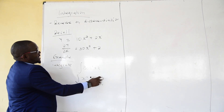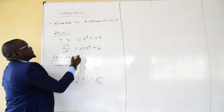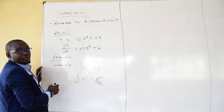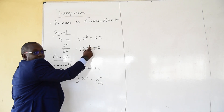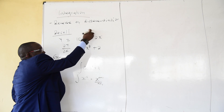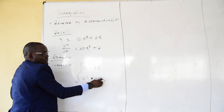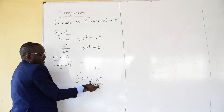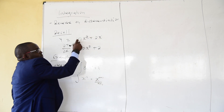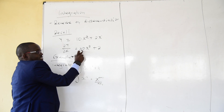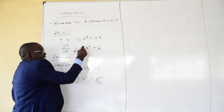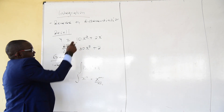The reason we are adding 1 is because when you are doing differentiation, you take the power and minus 1. So to reverse that, you add 1. The reason we are dividing by n plus 1 is because during differentiation you multiplied the power by the coefficient. To reverse the effect, you add 1 and divide by n plus 1 so that you can get back the original coefficient.